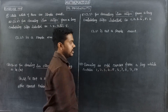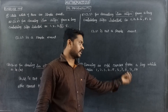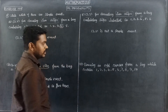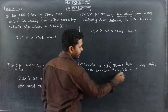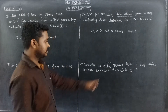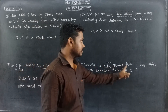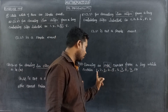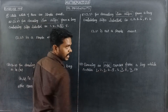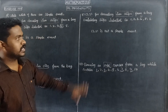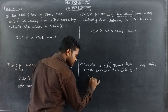So drawing an odd number from a bag which contains 1, 2, 3, 4, 5, 6, 7, 8, 9, 10. Numbers 1 to 10. So odd numbers - we know that odd numbers are 1, 3, 5, 7, 9. So drawing an odd number from a bag which contains 1 to 10. So the sample space is the list of all possible outcomes.